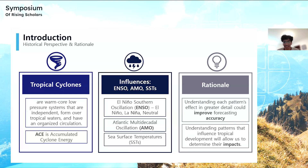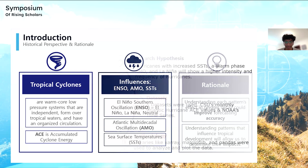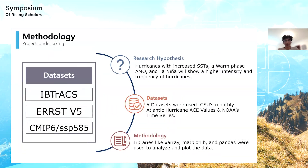So why exactly am I researching all of this? It's to better understand each pattern's effect in greater detail, which could overall improve forecasting accuracy. Understanding these patterns and how they influence tropical development will allow us to determine future impacts, including economic impacts especially. My research hypothesis was that increased sea surface temperatures, a warm-phase AMO, and La Niña will show a higher intensity and frequency of hurricanes.